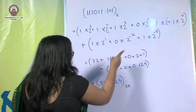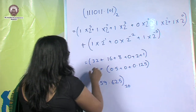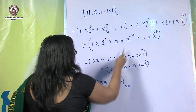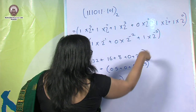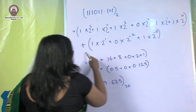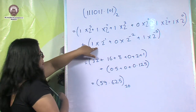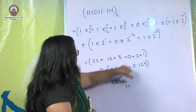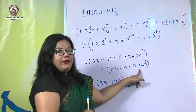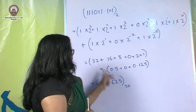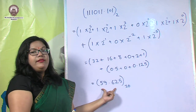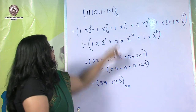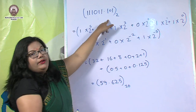When we sum it all up, the integer part gives 32 + 16 + 8 + 0 + 2 + 1, and the decimal part gives 0.5 + 0 + 0.125. The total is 59.625, which is the decimal equivalent of this binary number.